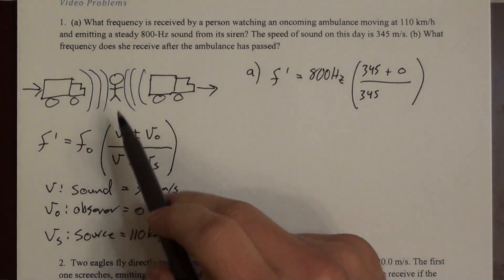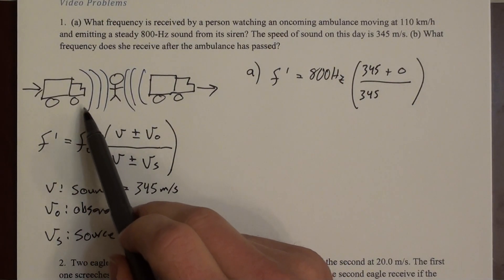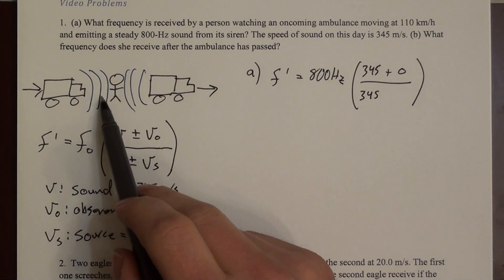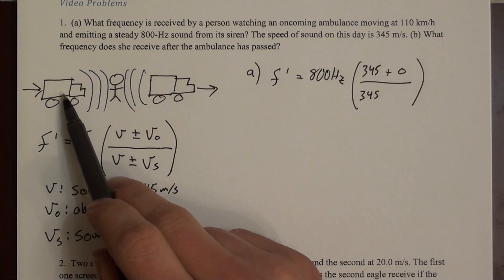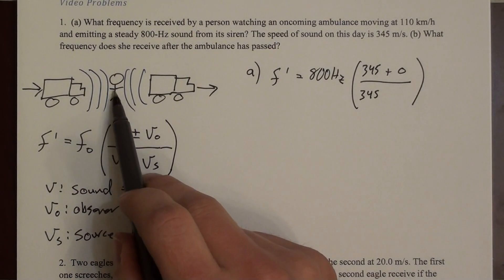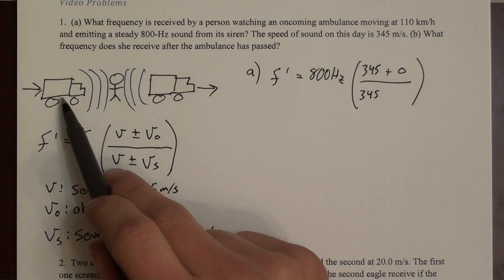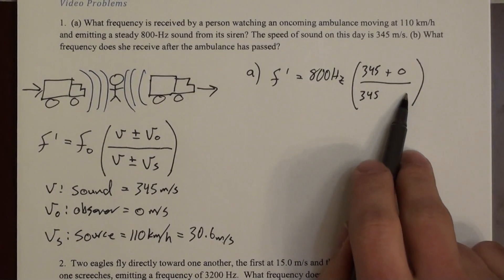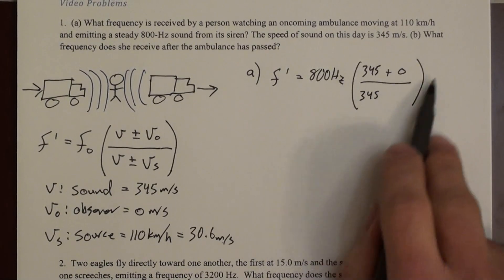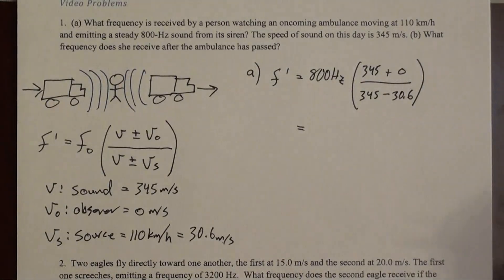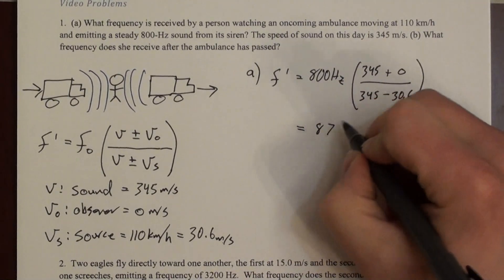So we can look at this situation and say, these wave fronts leaving the ambulance are going to be closer together than they should be, closer together than if the ambulance were at rest relative to the observer. So that's going to increase the frequency. The observer is going to get these wave fronts more often than she would if the ambulance were at rest. So this should increase the frequency. So how do I increase something by changing the denominator? Well, if I decrease the denominator, I increase the fraction. So I'm going to subtract 30.6 meters per second. When I do that math, I end up with 878 hertz.